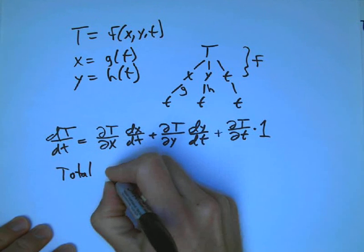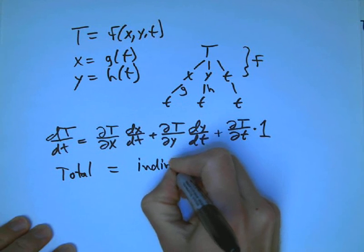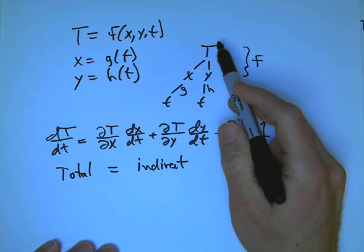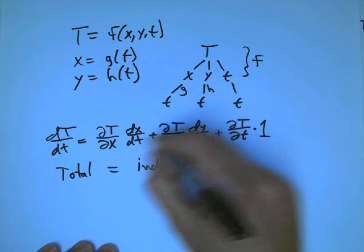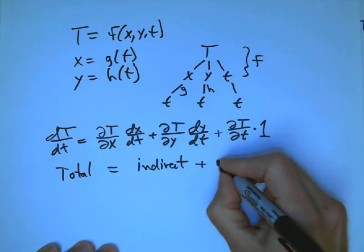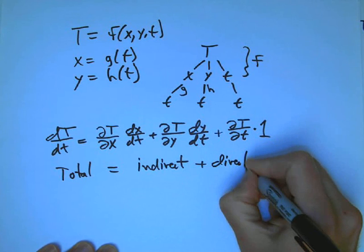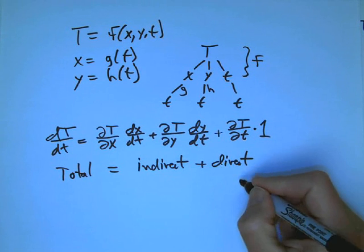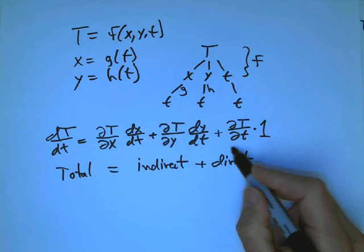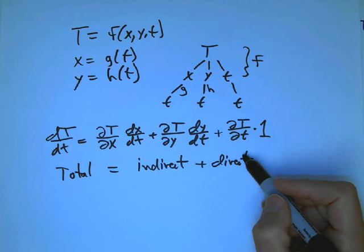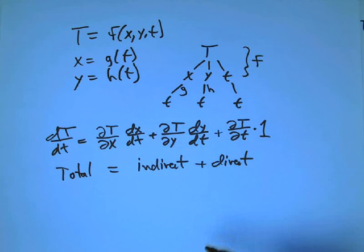Let me write that down. Total derivative is the indirect dependence of this final quantity on the initial quantity, which involves non-trivial chain rule stuff multiplied together, plus the direct dependence. You won't see this terminology too much in a book, but it's pretty accurate that temperature in this case depends directly on time and indirectly on time.